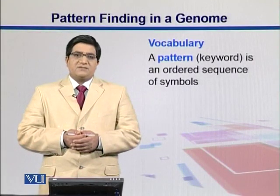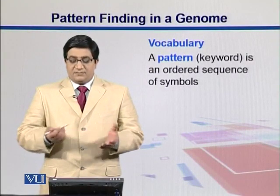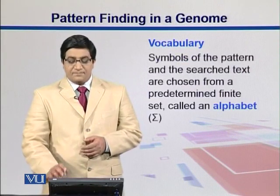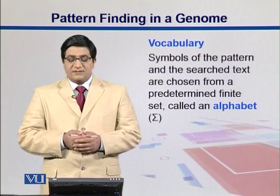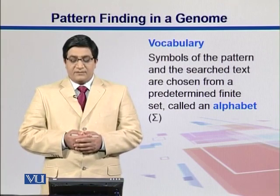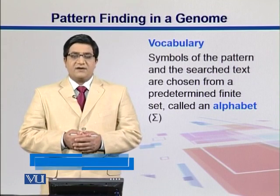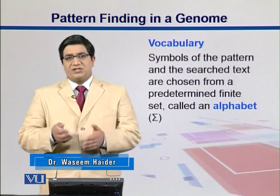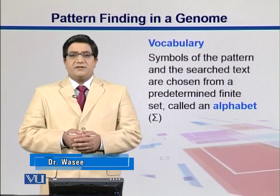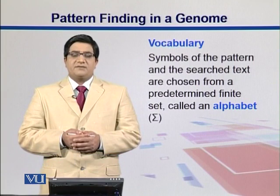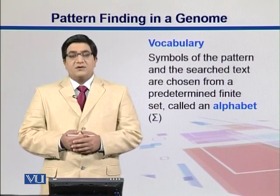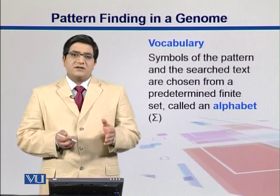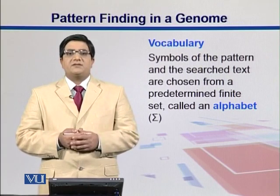A pattern or keyword is basically an ordered sequence of symbols. The symbols of the pattern and the search text are chosen from some alphabet. For example, if you are working with DNA, the alphabet is A, G, T, C. For proteins, we have an alphabet of 20 amino acids. So a pattern can be anything derived from these symbols, and the search sequence is also derived from some alphabet.